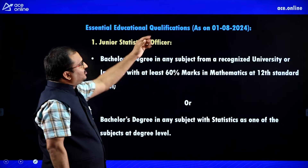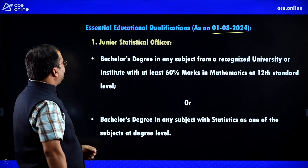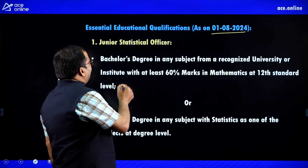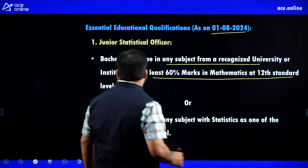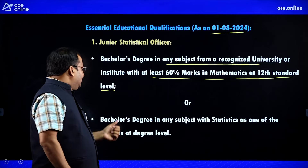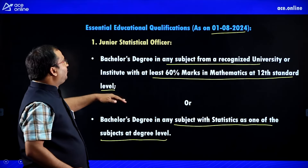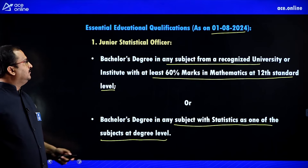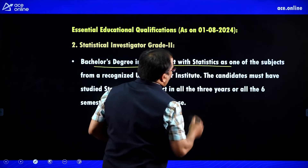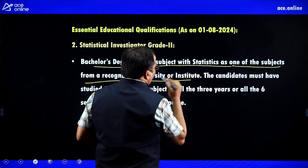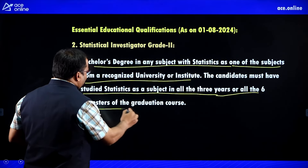Essential educational qualifications as on 1st August 2024: For Junior Statistical Officer, a bachelor's degree in any subject with at least 60% in mathematics at 12th standard level, or a bachelor's degree with statistics as one of the subjects at degree level. For Statistical Investigator Grade 2, a bachelor's degree with statistics as one of the subjects, where the candidate must have studied statistics in all 3 years or all 6 semesters of the graduation course.